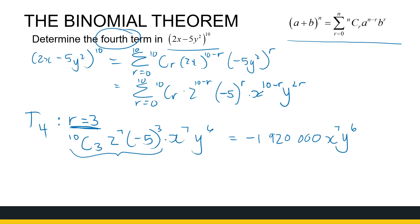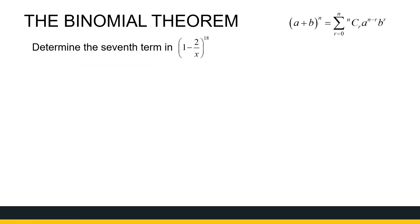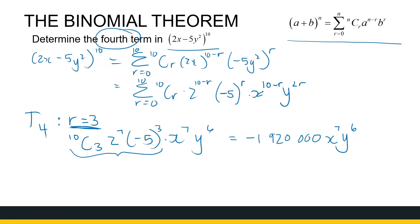Now this is my whole coefficient, so we can see it's going to be a negative number — quite a big number. It's −1,920,000 x to the power 7, y to the power 6. Sometimes these numbers get a bit big to write out, but just understand that I get my coefficient from the numbers I have here. So this was asking for a specific term in the expansion.